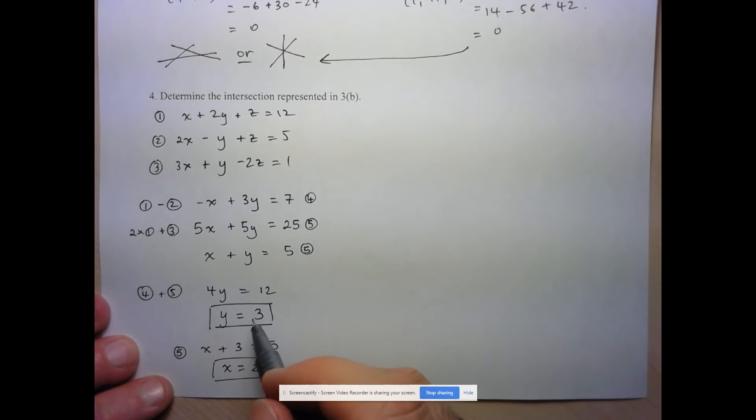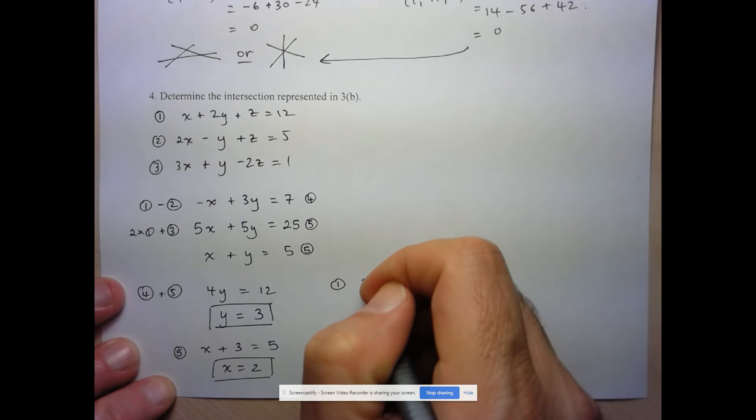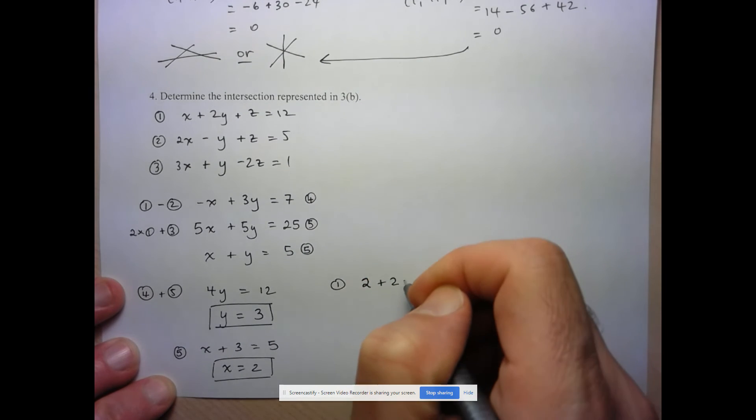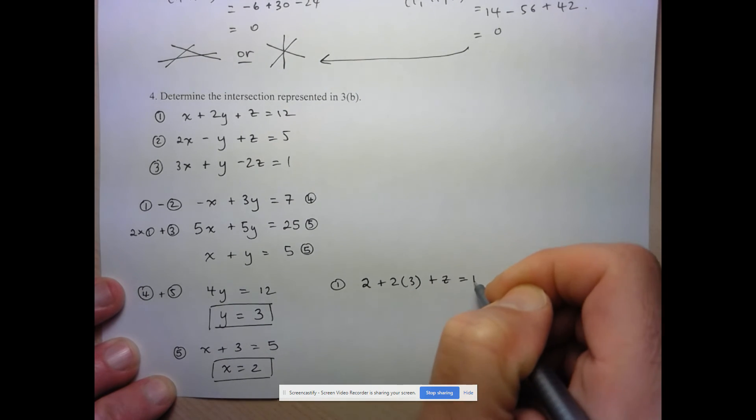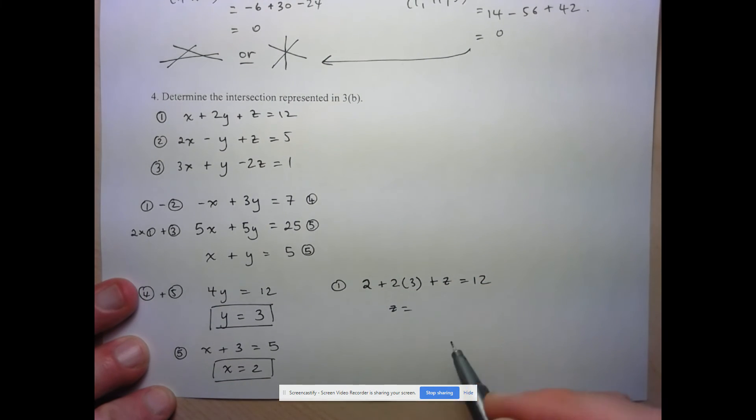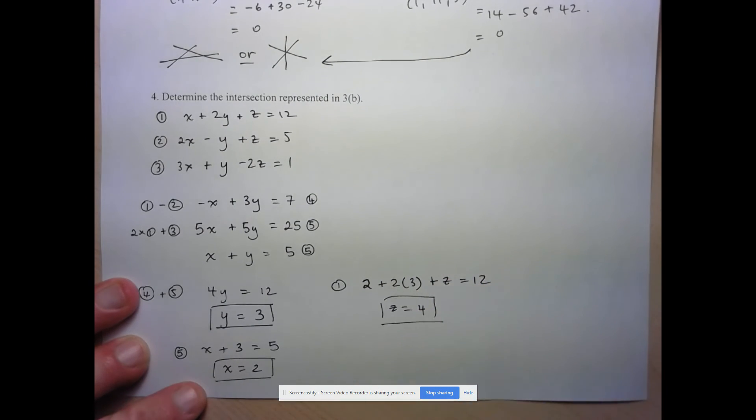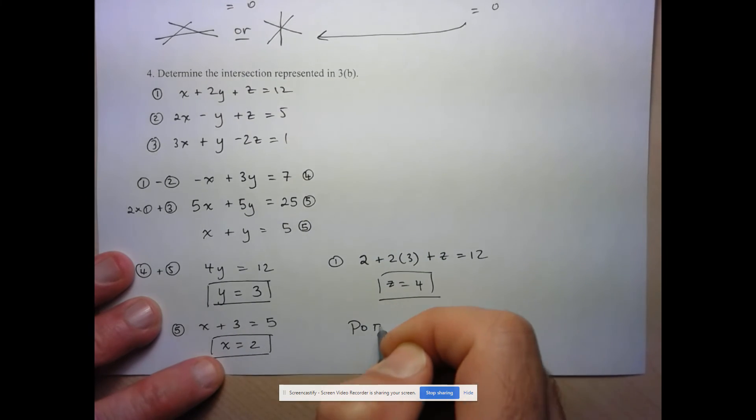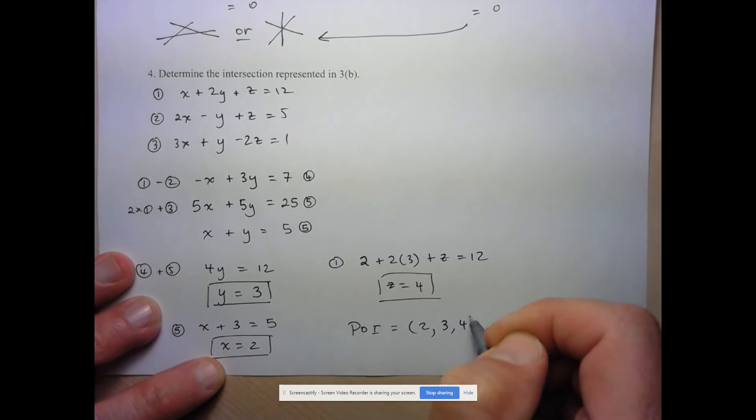And hopefully you see what I'm going to do next. I'm going to take these two known values of x and y and substitute them back into one of these equations. So I'll substitute everything back into equation 1. So we have x, which we know is 2, plus 2y, 2 times 3 is 6, then plus z equals 12. So what's z going to be equal to? Well, 2 plus 6 is 8. 12 minus 8 is 4. And there's my third component. So my point of intersection is given by x equals 2, y equals 3, and z equals 4.